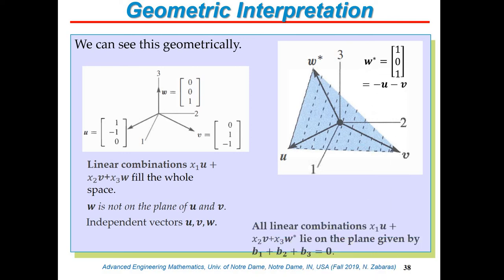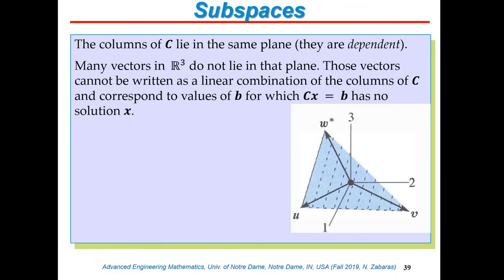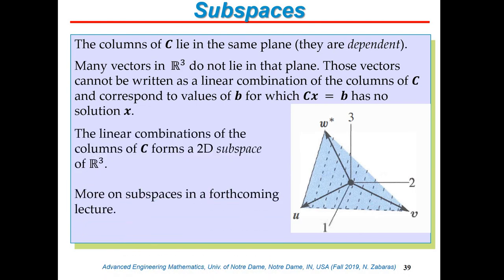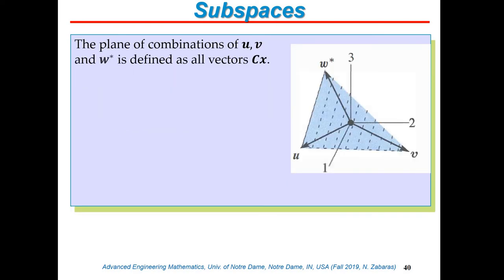The plane spanned by u, v, and w* satisfies b1 + b2 + b3 = 0 — only b's on that plane yield solutions. The vectors u, v, and w* form what I call a two-dimensional subspace of R³. I haven't formally defined spaces yet, but this plane in three dimensions is a subspace of the three-dimensional R³ space. We'll give a formal definition later.